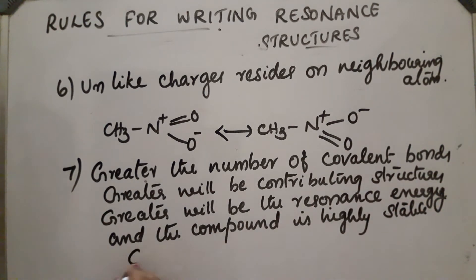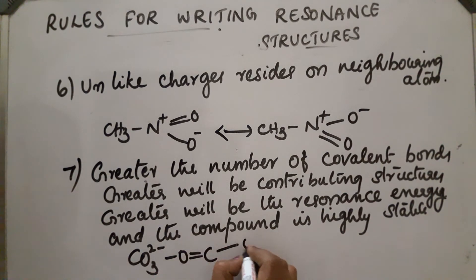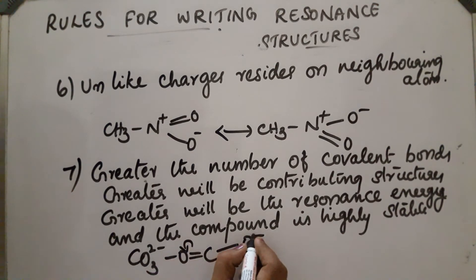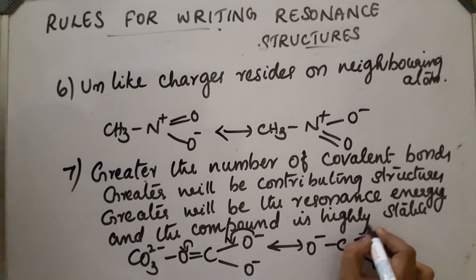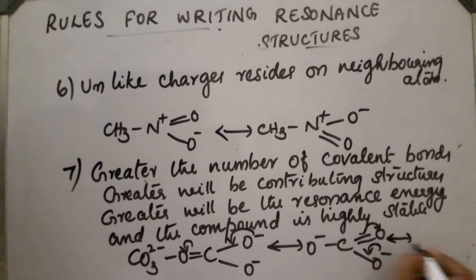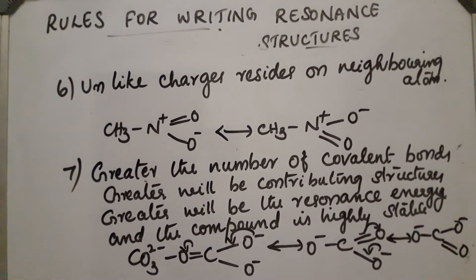Take the example of CO₃²⁻, which has three resonating structures. Greater the number of covalent bonds, greater will be the number of contributing structures, greater will be the resonance energy, and the compound is highly stable.